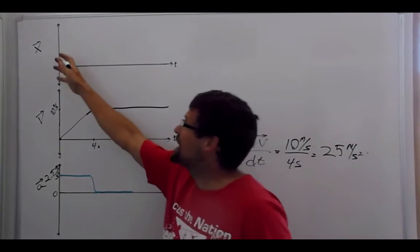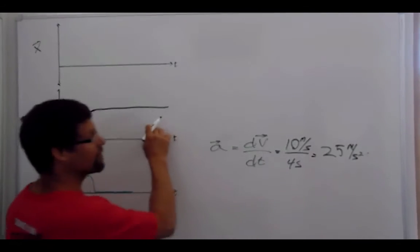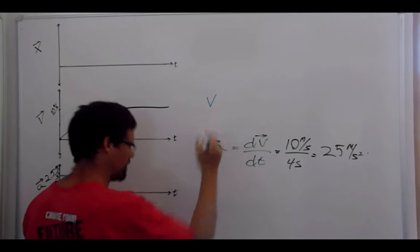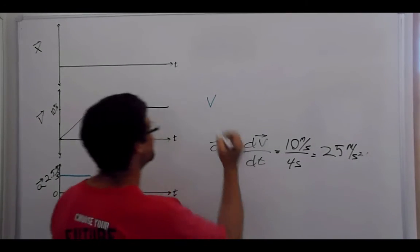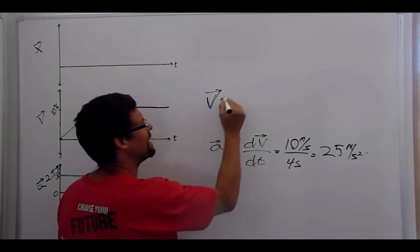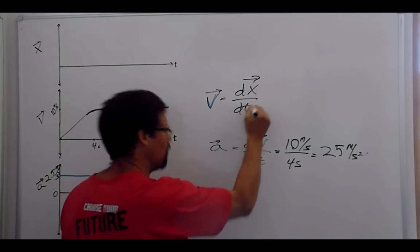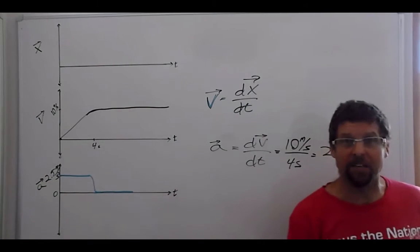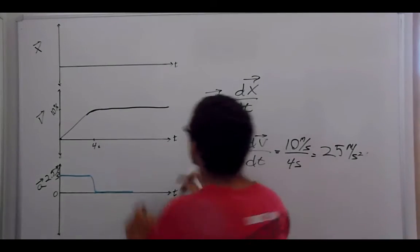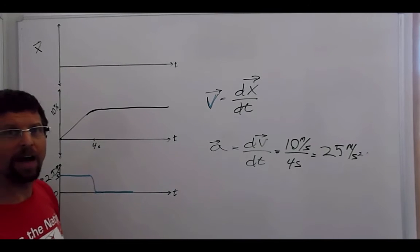All right, so how does displacement relate to velocity? We can draw the same equation that velocity is equal to the rate of change of displacement. How fast I'm moving is how fast my position is changing. So that means this graph is the slope of that graph.